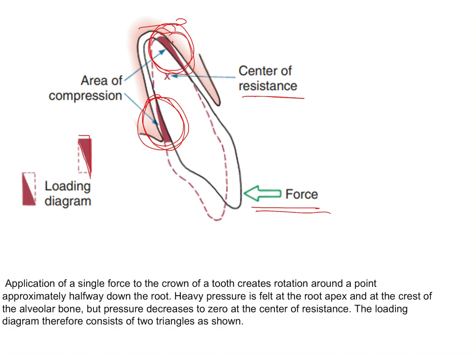Since very heavy pressures are felt on these two points, it is suggested to keep tipping forces to a minimum. Tipping is the simplest type of tooth movement — applying a single point of force on the crown will bring about tipping. Since these areas must withstand the maximum forces, it is advised to keep tipping forces under 50 grams. This is important and could be asked in an examination.